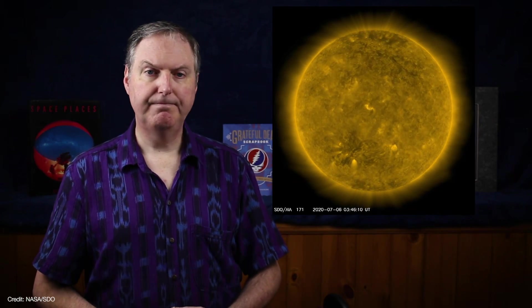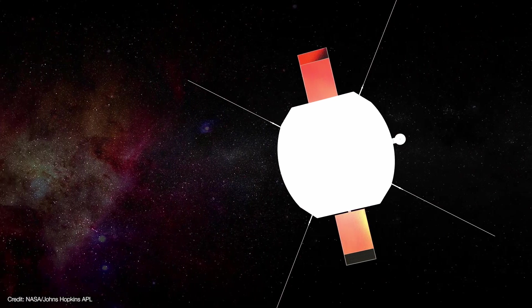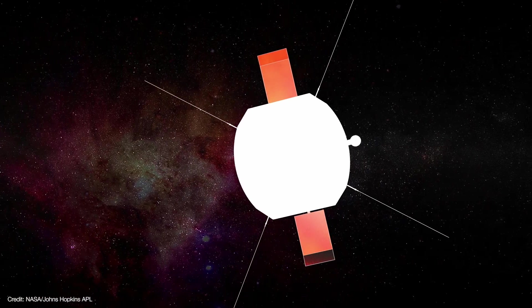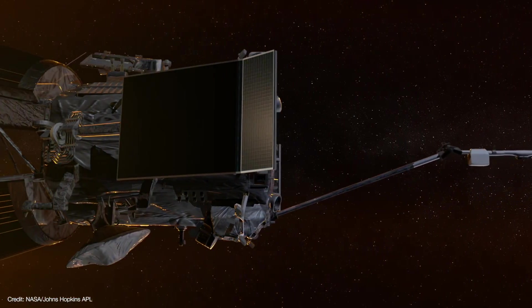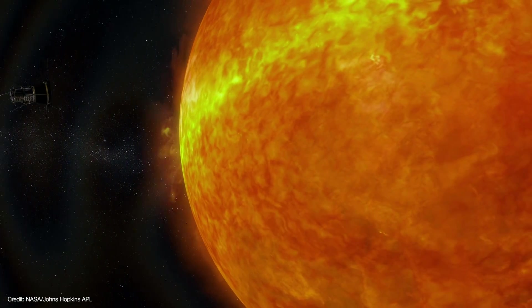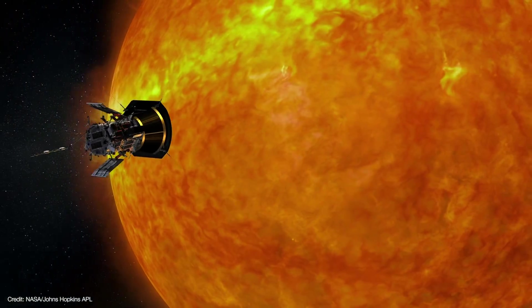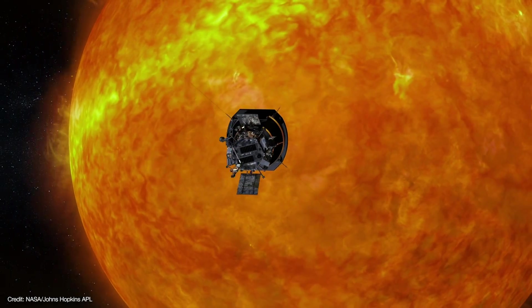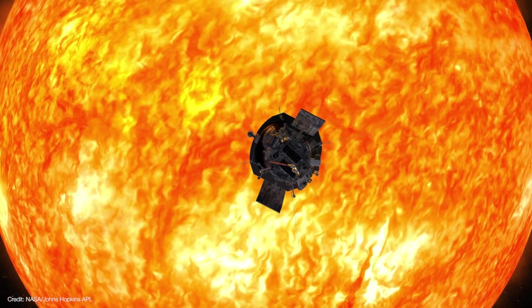But that requires being there, in the Sun's corona, which is really, really hot. That's why Parker is protected by a heat shield made of carbon composite, along with solar arrays that are cooled by water and retract as Parker swings around the Sun.